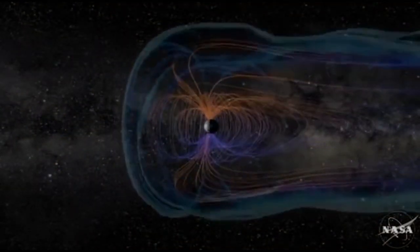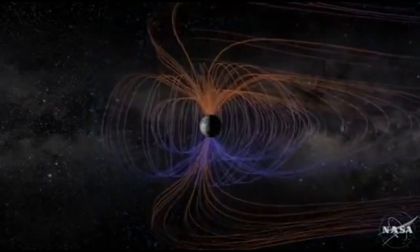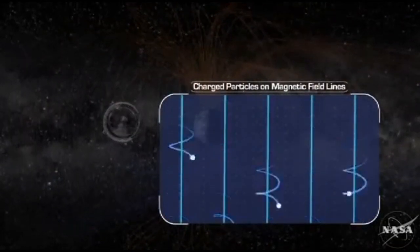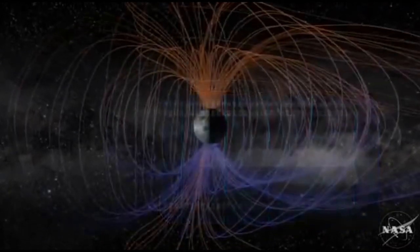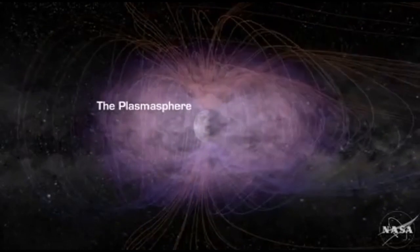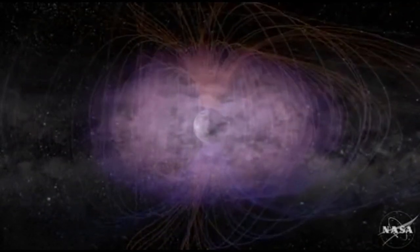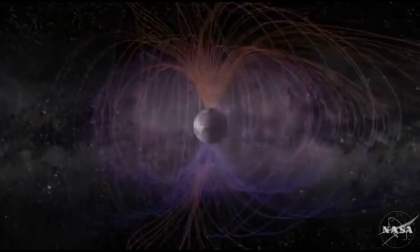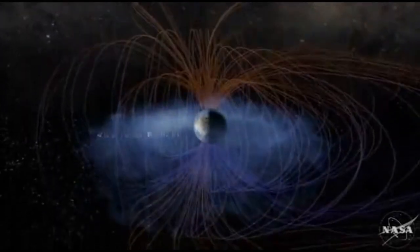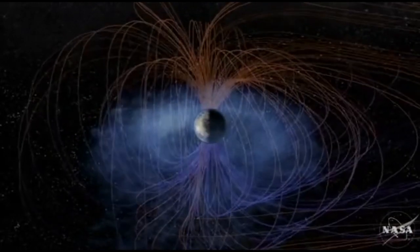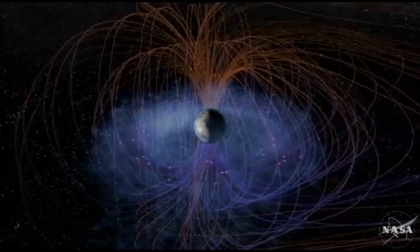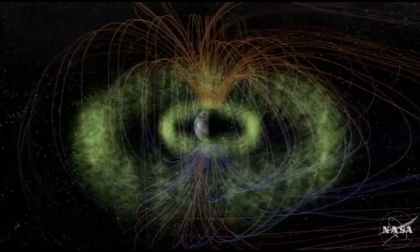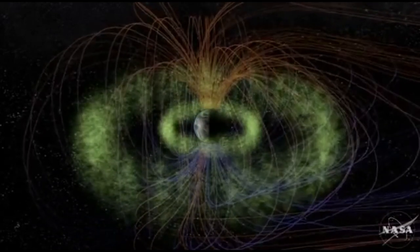The inner magnetosphere is composed of three populations of charged particles trapped in Earth's magnetic field. These particles gyrate around the field lines but rarely interact with each other. The plasma sphere is comprised of low-energy particles that drift up from the ionosphere, forming a sphere-like reservoir of very cold but fairly dense plasma that co-rotates with the Earth. The ring current is the second population, comprised of medium-energy particles drifting around the Earth, with protons drifting in one direction and electrons in the opposite direction.